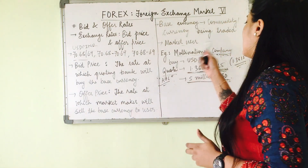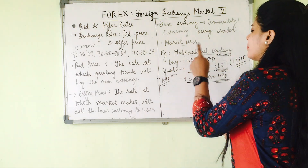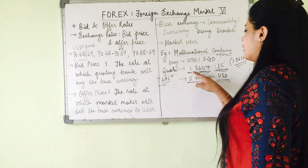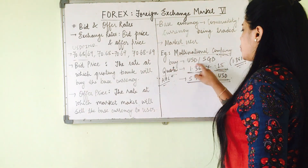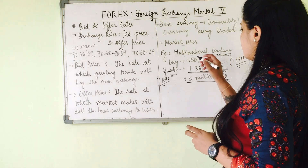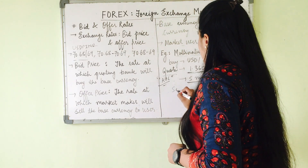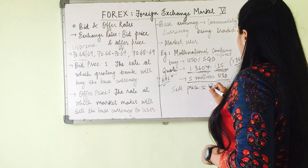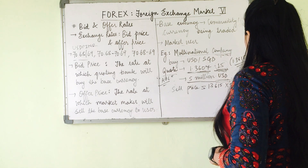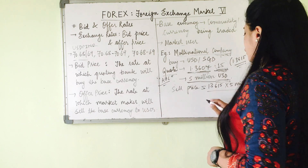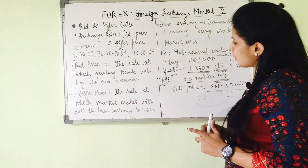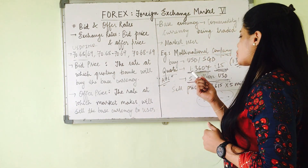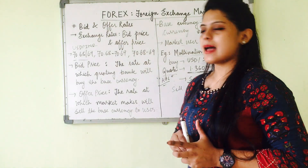So how do we solve this example? There is a multinational company that wants to buy 5 million US dollars, for which the bank has quoted 1.3607 and 1.3615 in Singapore dollars. The sell price will be the offer price. So the calculation is 1.3615 multiplied by 5 million — this will be the price at which the multinational company will buy 5 million US dollars from the bank, whose quote is 1.3607/1.3615.